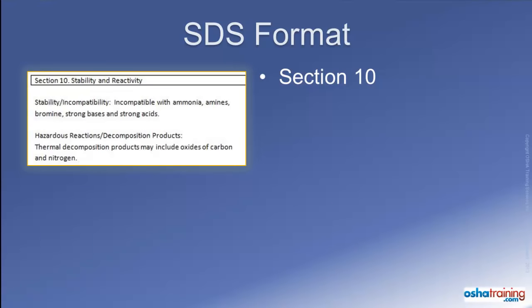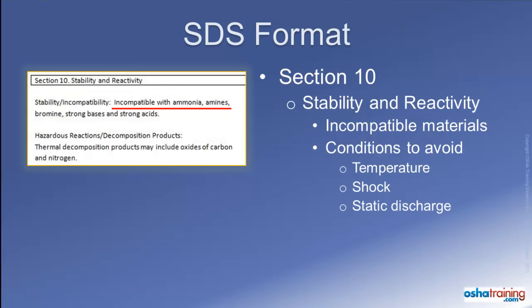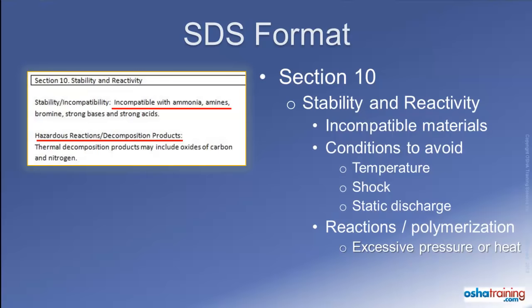Section 10 of a safety data sheet is titled Stability and Reactivity. Here you will find important information identifying any other materials which may be incompatible with the product, as well as any conditions to avoid during storage or handling, such as temperature extremes, shock, and static discharge. There will also be information about any conditions that could cause the chemical to react or polymerize, as this could cause the product to release excessive pressure or heat, or create decomposition products that could be harmful to exposed workers. When applicable, this section will also provide information about stabilizers that may be needed to maintain stability of the product.